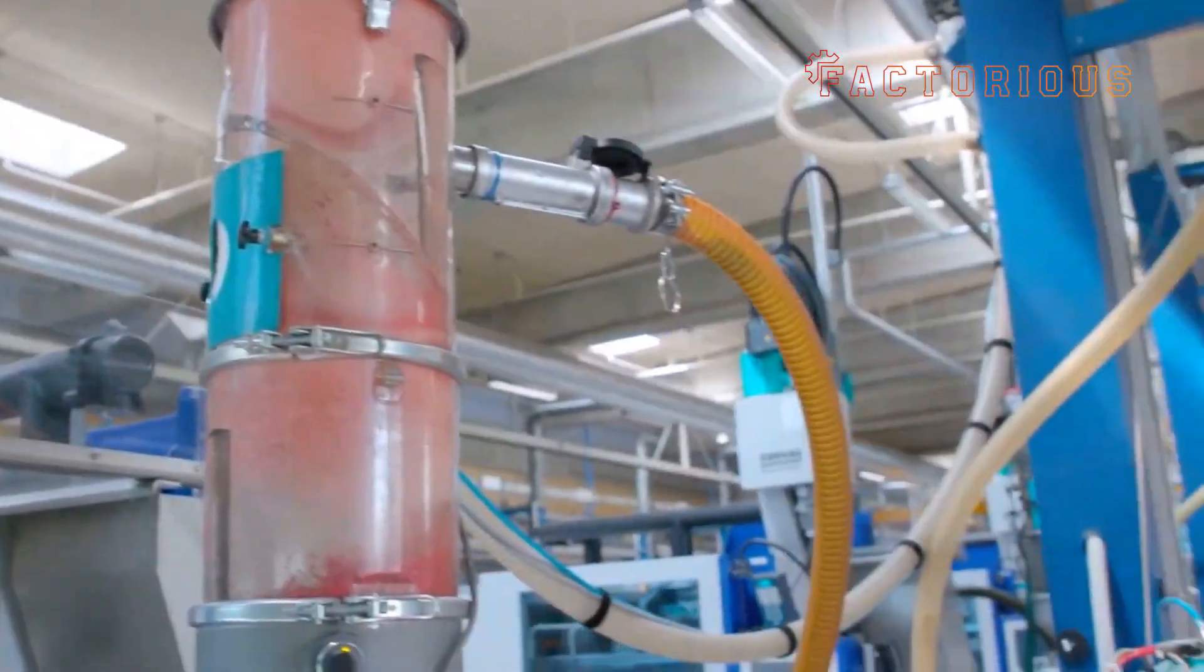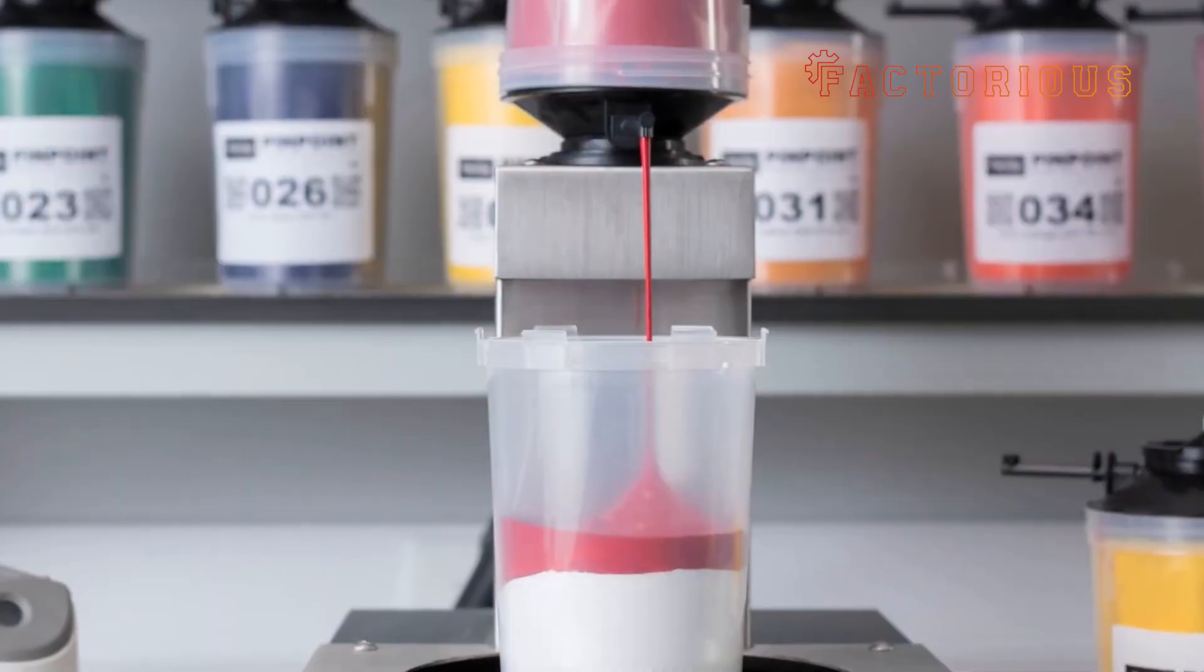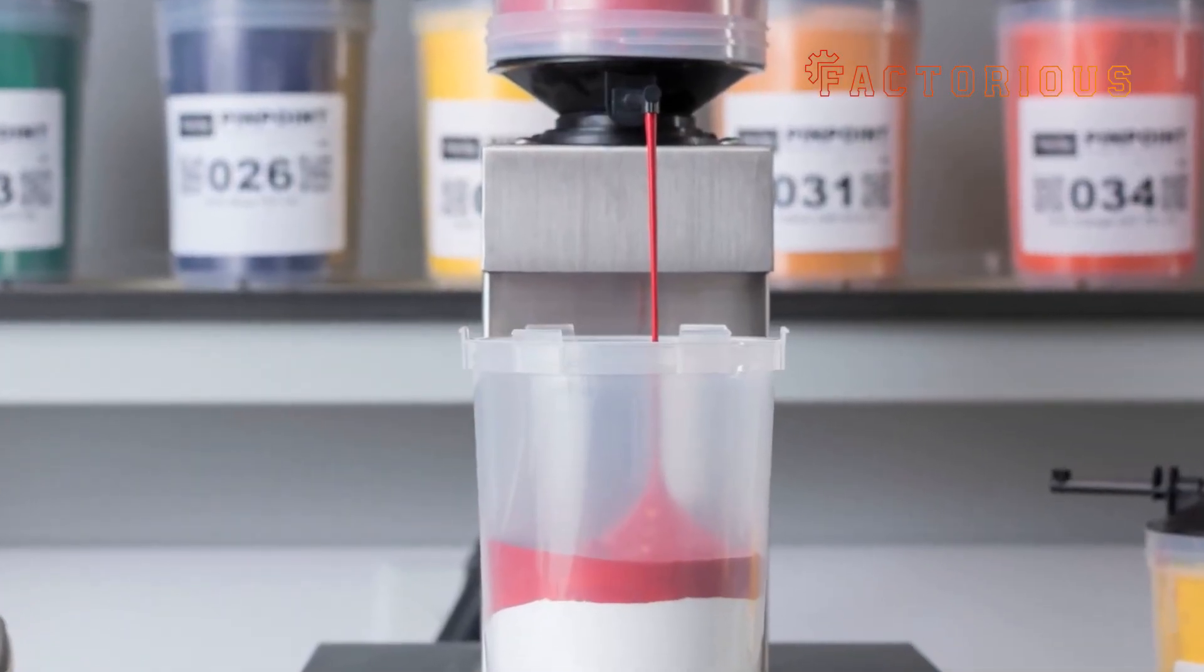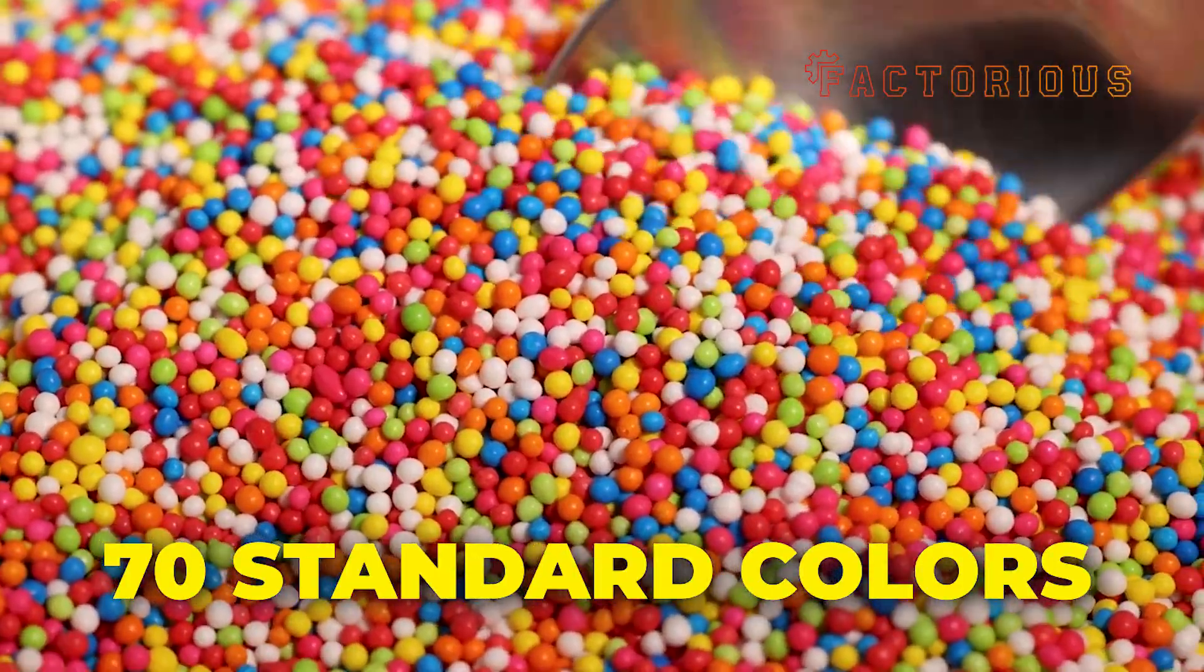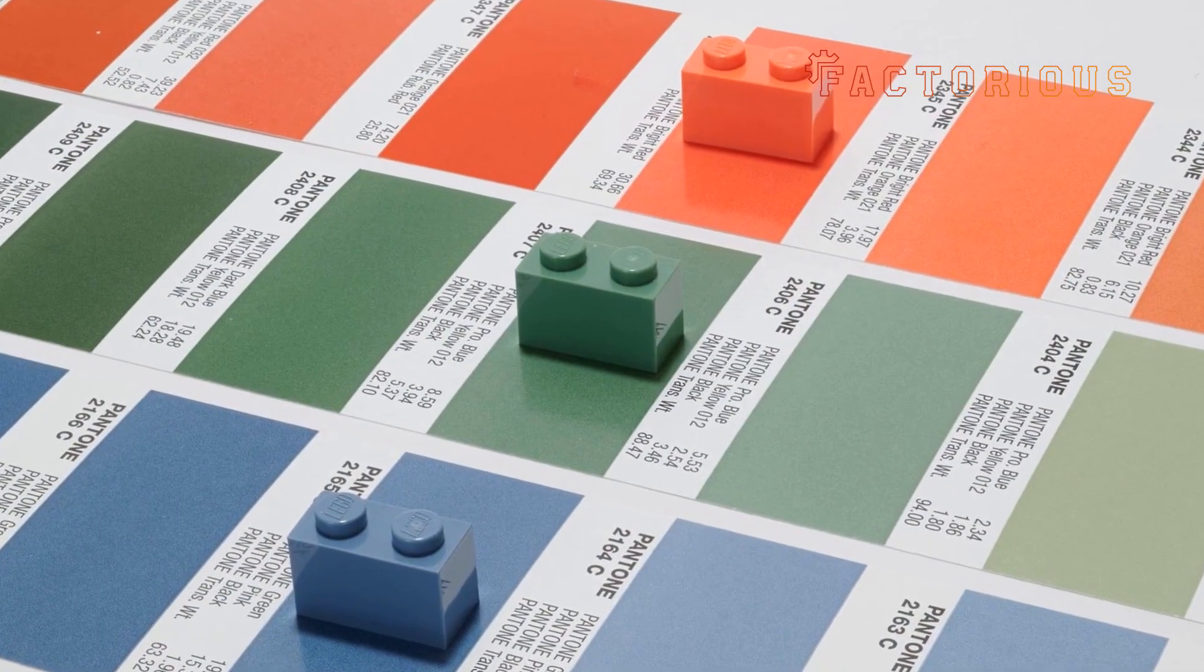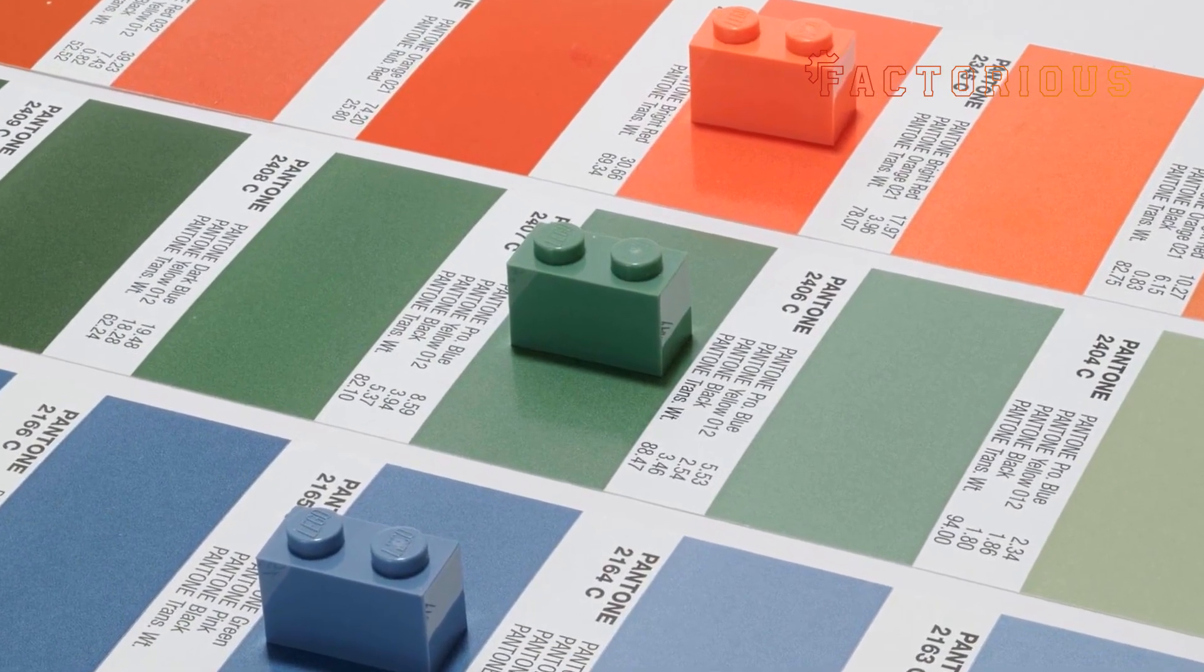Each color of Lego starts with these pellets. Lego uses precise color recipes measured down to fractions of a gram. In total, there are about 70 standard colors in Lego's palette, from classic bright red to shades like sand green and earth blue.